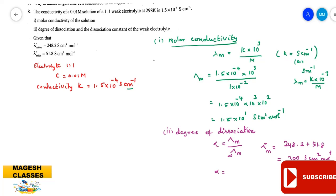Substituting the λm value: α = 15 S cm² mol⁻¹ / 300 S cm² mol⁻¹ = 15/300 = 1/20 = 0.05. So the degree of dissociation is 0.05.